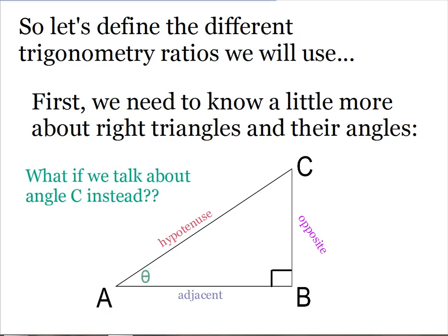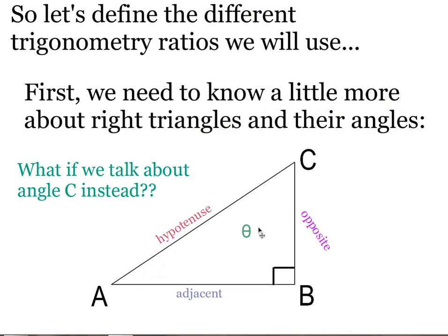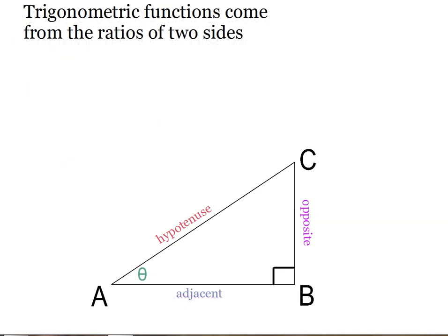What if I talk about angle C instead? Let me just show you the difference. What if I move theta over to angle C, so that I'm talking about this angle? Well, the hypotenuse will stay in the same place. The things that will change, though, is now side BC is the adjacent side because it's next to the angle. And side AB becomes my opposite side because that's the side that's opposite of angle theta or across from. So make sure you're paying super close attention to which angle we're talking about.